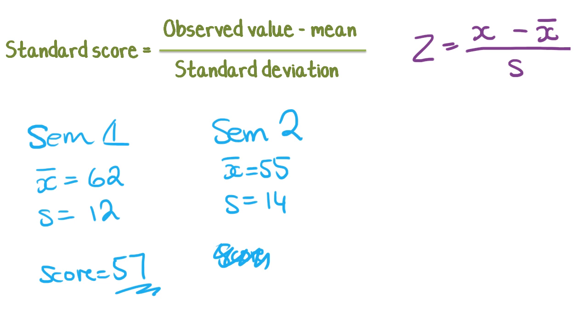So what we do to work this out is we use this formula. For semester 1, our notation looks like this. The z-score is equal to x, which in this case is 57, minus the mean of x, which in this instance for semester 1 is 62, all divided by the standard deviation, which is 12, and that works out to be negative 0.42. So that's the z-score for semester 1.